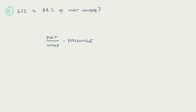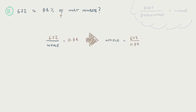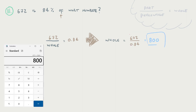Example number three: 672 is 84% of what number? The word 'of' is there as an indicator. What we don't know is the whole. We know 672 is the part, and 84% is the percentage. Notice I'm plugging in 0.84 — not 84 — to the percentage; have to use the percent decimal. We've already isolated the whole: it's part divided by percentage. So 672 divided by 0.84 gives us 800. So 672 is 84% of 800.